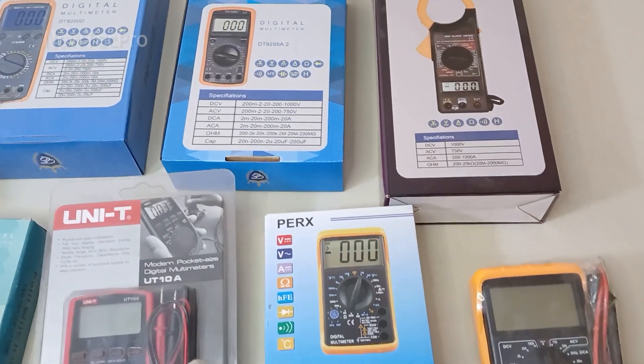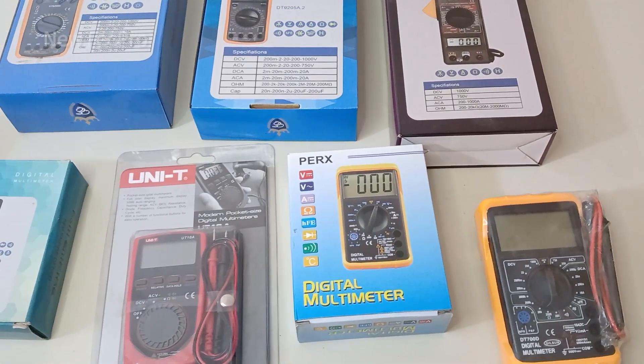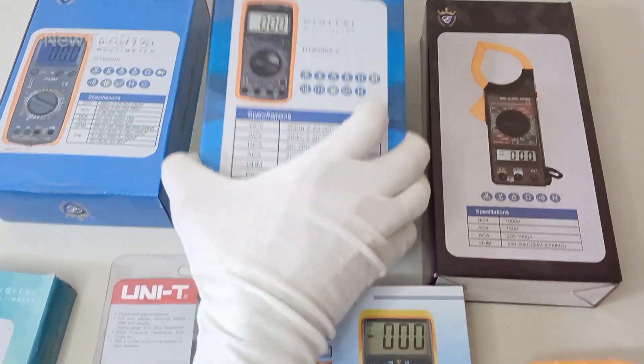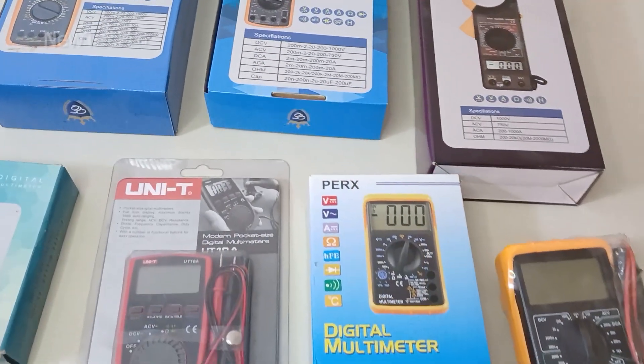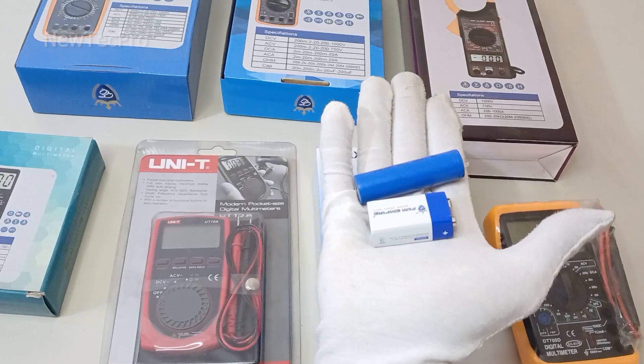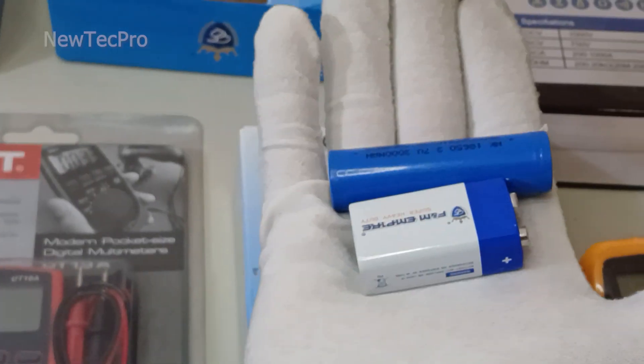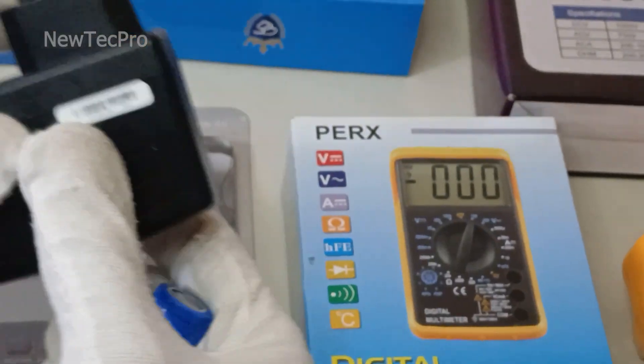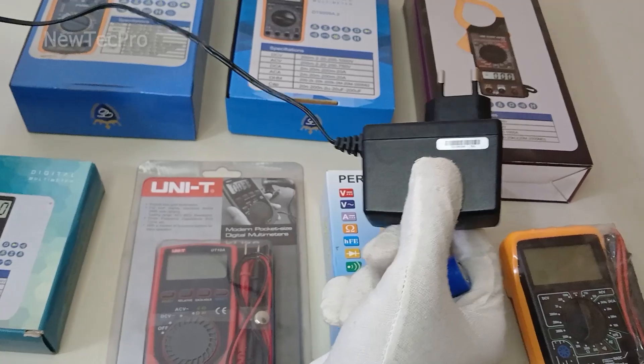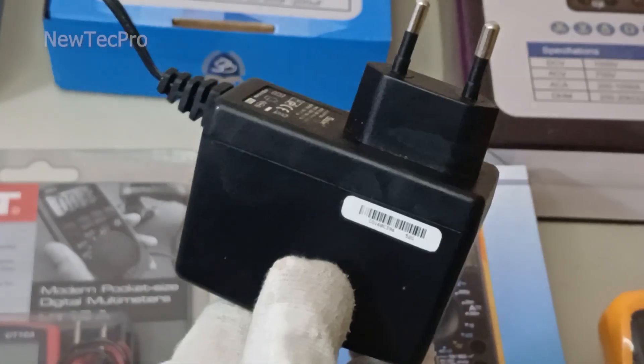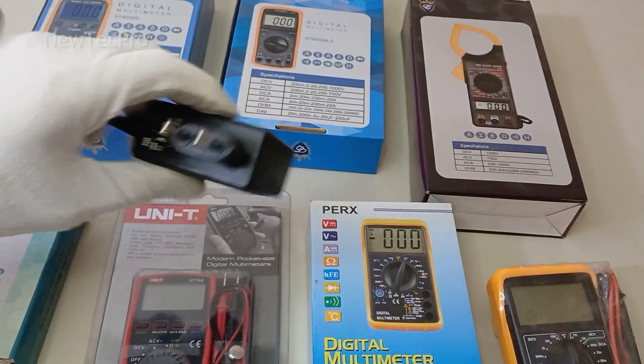This video has got you covered. First, a brief explanation: DC voltage is the kind of voltage you will find in batteries and other devices, for example AC/DC adapters that provide constant voltage.